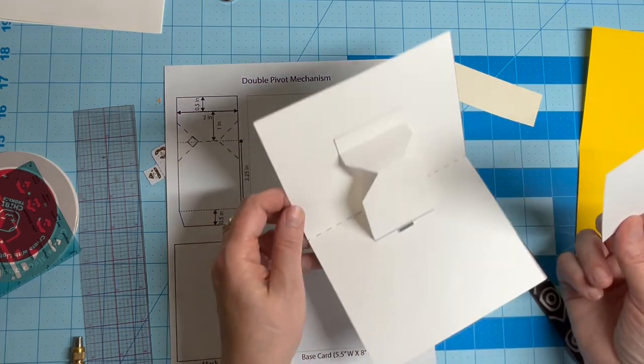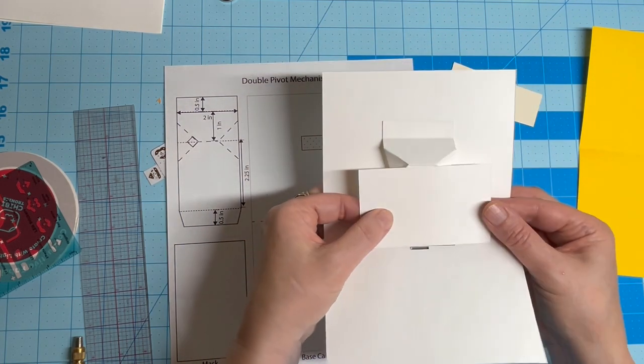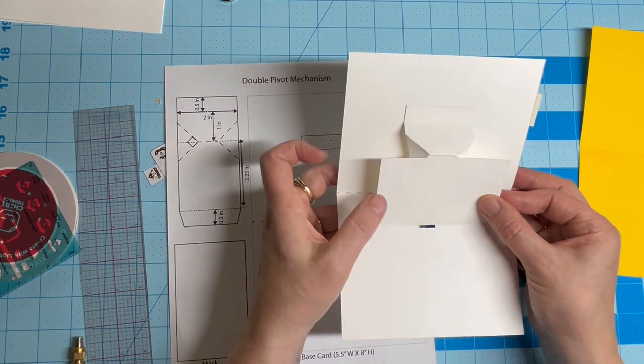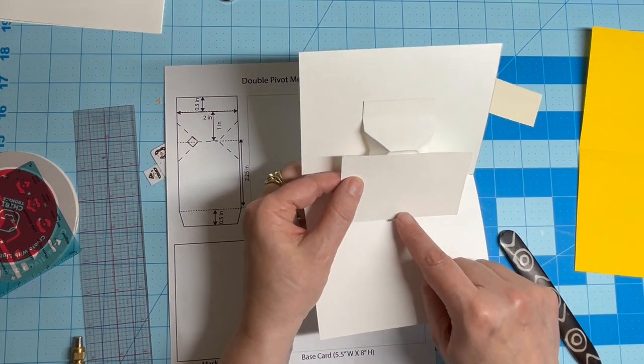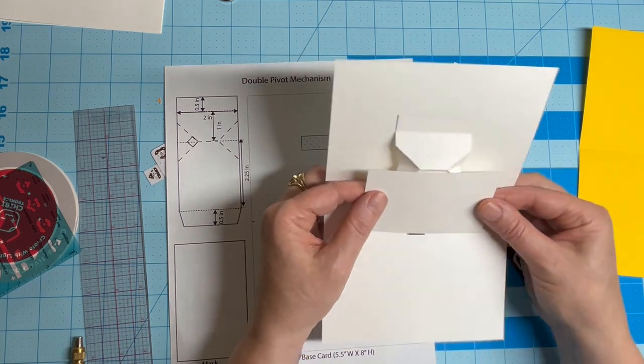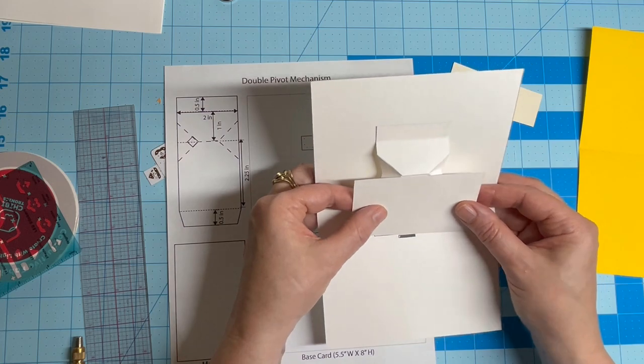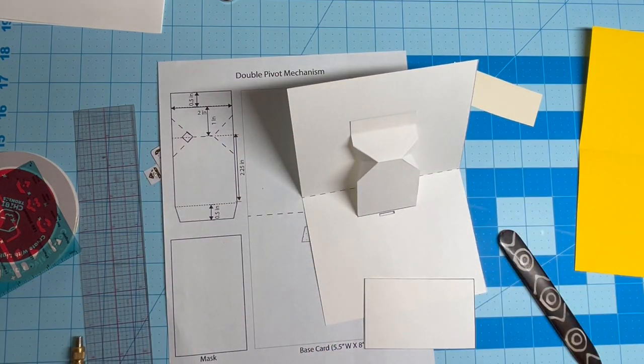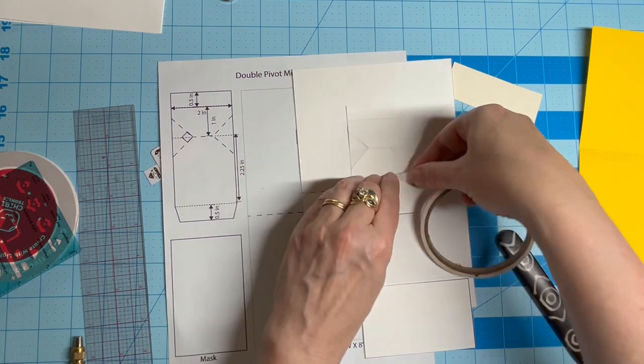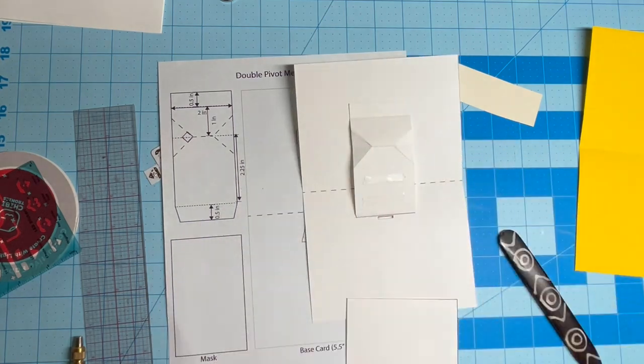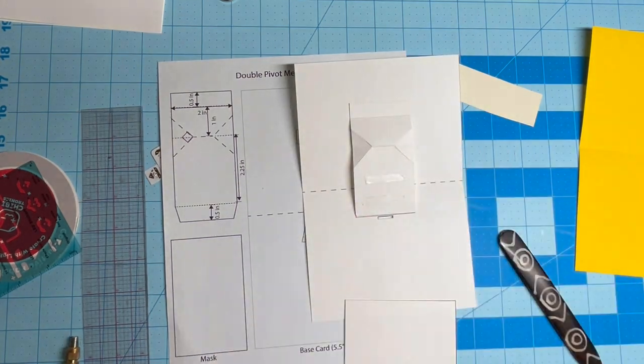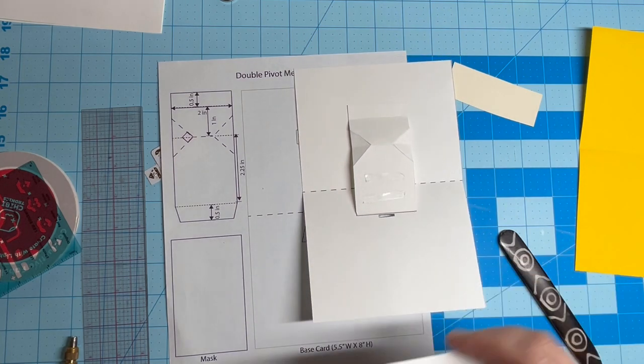The next step is to cover the mechanism with a mask. This piece needs to be large enough to disguise the mechanism and wide enough for you to build your circuit upon. Adhere it with an adhesive of your choice, being careful not to cover the slot.